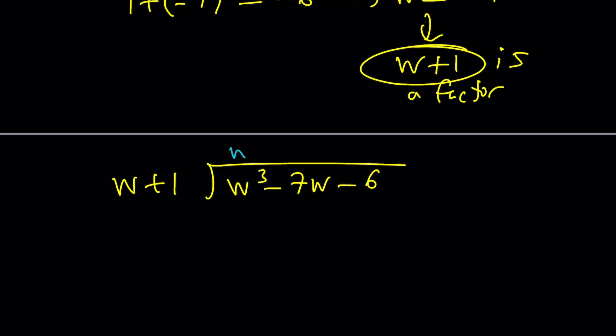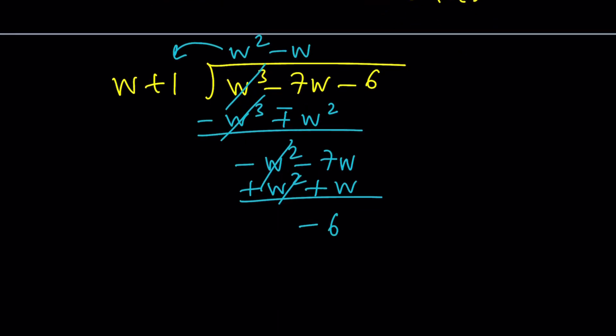W goes into W cubed, W squared times, then I'm going to go ahead and distribute that. W cubed plus W squared. And then I have to negate and add. In other words, I need to subtract. That gives me negative W squared minus 7W. That's going to go negative W times. That'll be negative W squared minus W. Negate and add one more time. This will become negative 6W. Bring down the negative 6. And then W plus 1 is going to go into this negative 6 times. And that'll finalize it because the remainder, as I said earlier, will be 0. Make sense? Great.